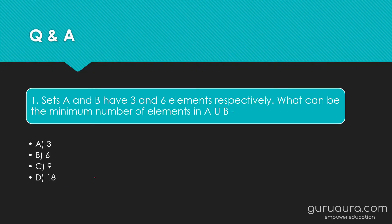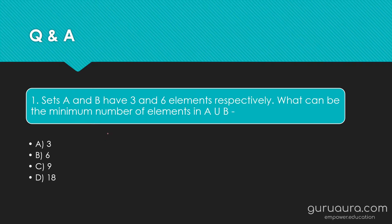The first question is: Sets A and B have three and six elements respectively. What can be the minimum number of elements in A union B? The answer is one of the four given options. Pause the video and try to solve it, then play the video again to see how you answered.